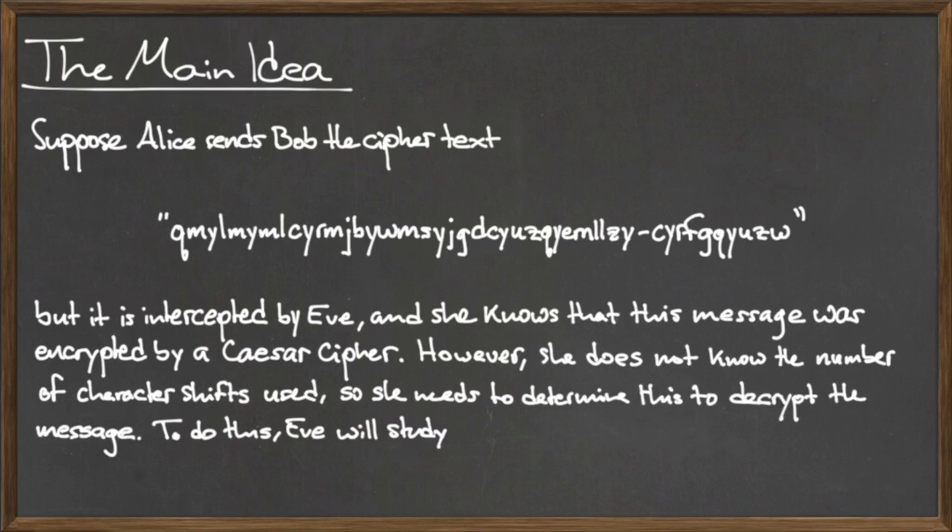There are only a maximum of 26 character shifts that are possible using a Caesar cipher, so Eve could try every possible combination of character shifts in an attempt to recover the message.